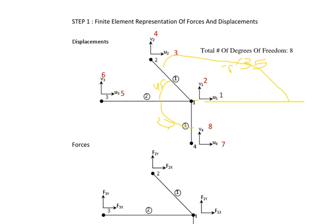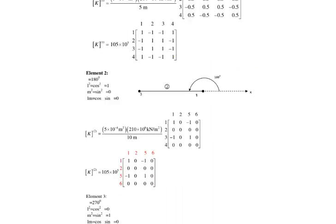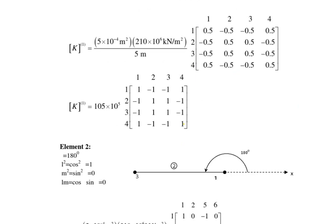The stiffness matrix for element 1 is K1 = (A1·E1/L1) times the standard truss element matrix. Element 1 connects nodes 1 and 4, so the degrees of freedom are 1, 2, 3, 4. It is very important to correctly label these when assembling the global stiffness matrix. After substituting the direction cosines, we obtain the K1 matrix. Similarly, for element 2 with θ = 180°: L² = 1, M² = 0, LM = 0. K2 = (A2·E2/L2) and element 2 connects nodes 1 and 3.